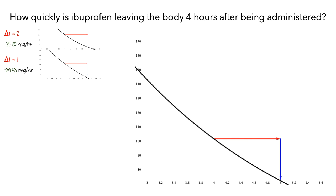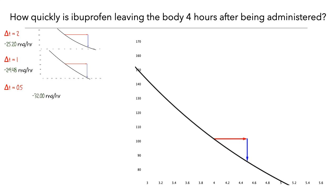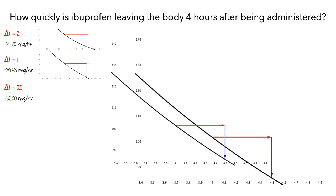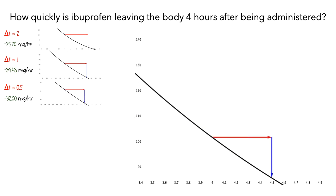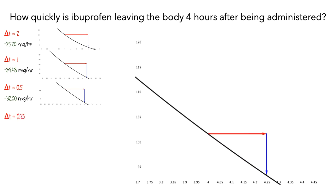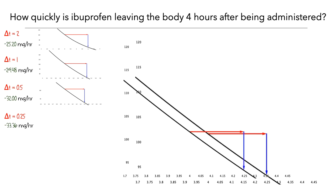Now let's look at what would happen if we used a smaller delta t. Here, delta t is equal to 1/2. We can again compute the average rate of change over this interval by dividing the change in f by the change in t. So when delta t is 1/2 hour, the average rate is –32 mg per hour. We'll zoom in a bit to see this better, and then keep this image on the screen. Then we could use a smaller delta t — say, 1/4 — which would give us an average rate of –33.36 mg per hour. And we'll save this picture too.